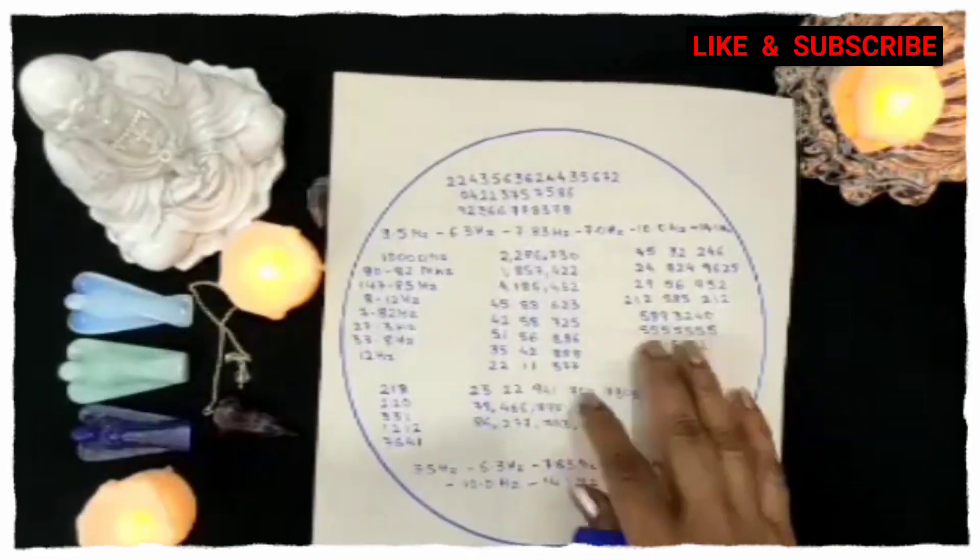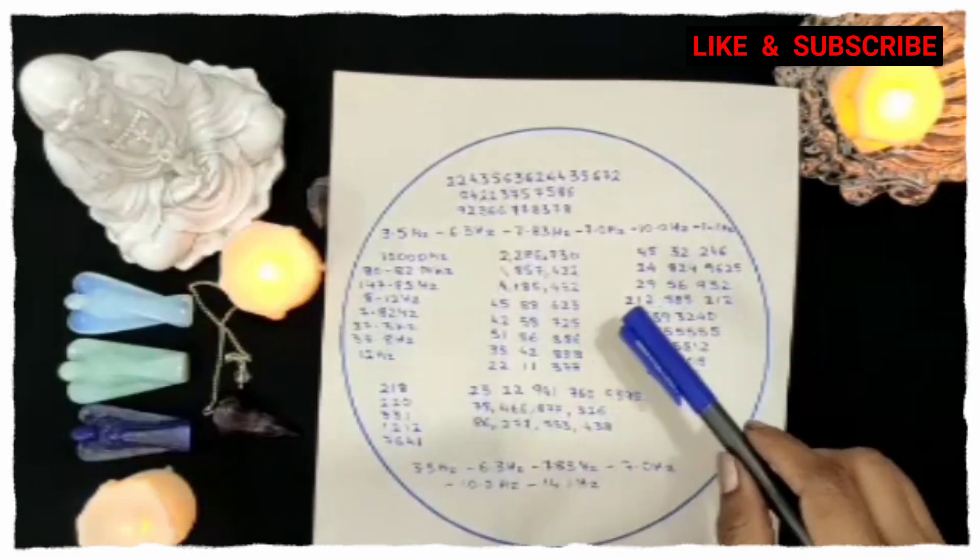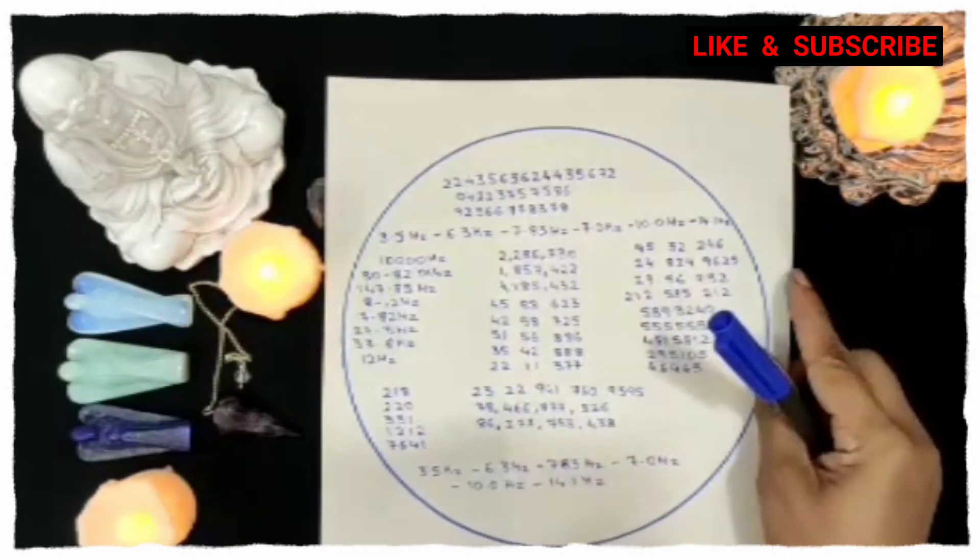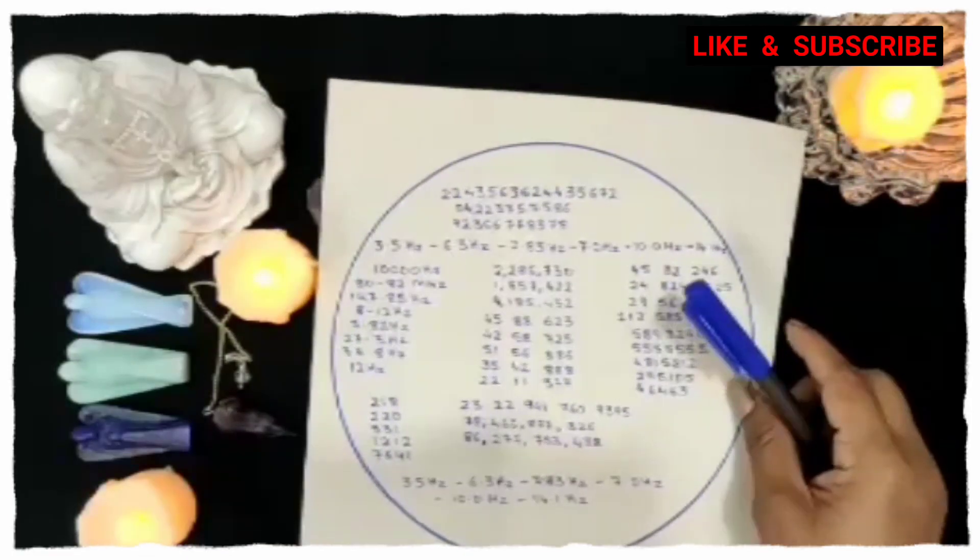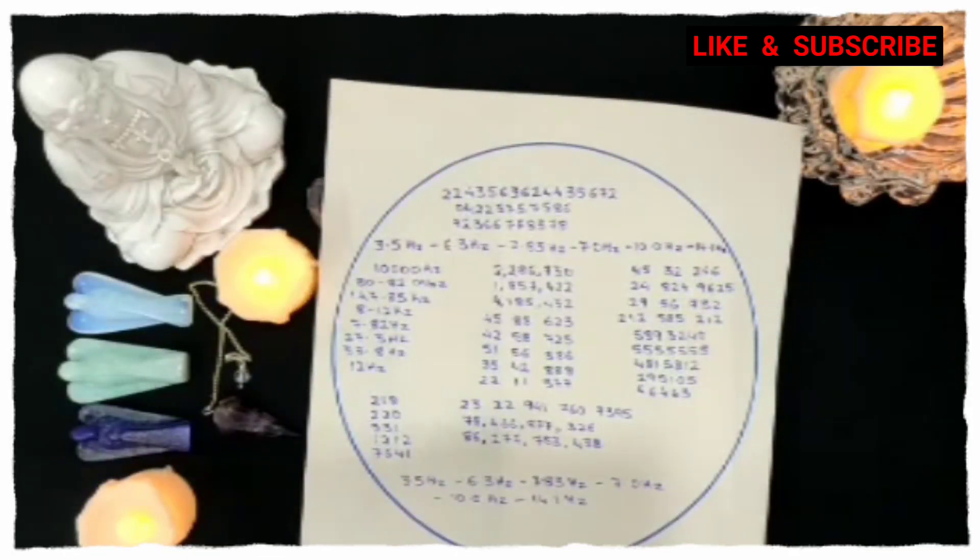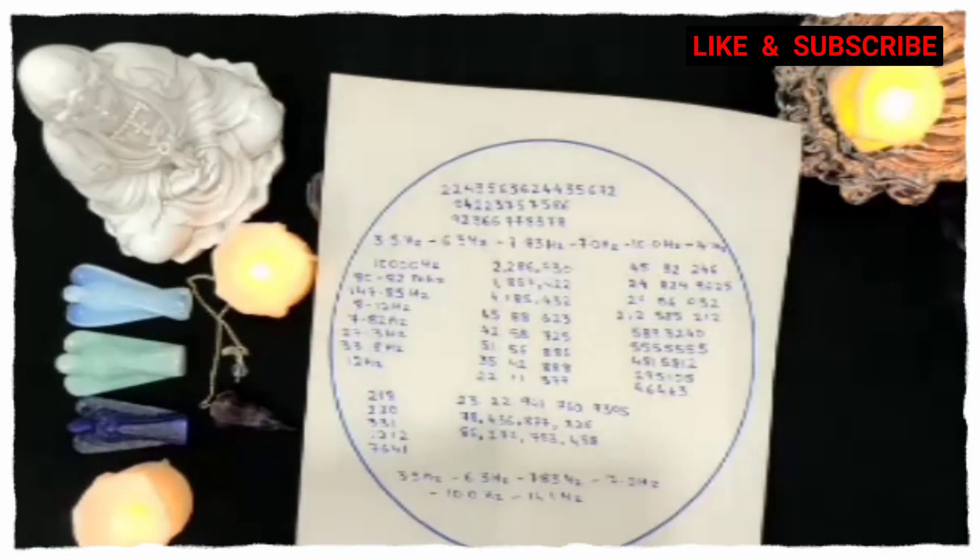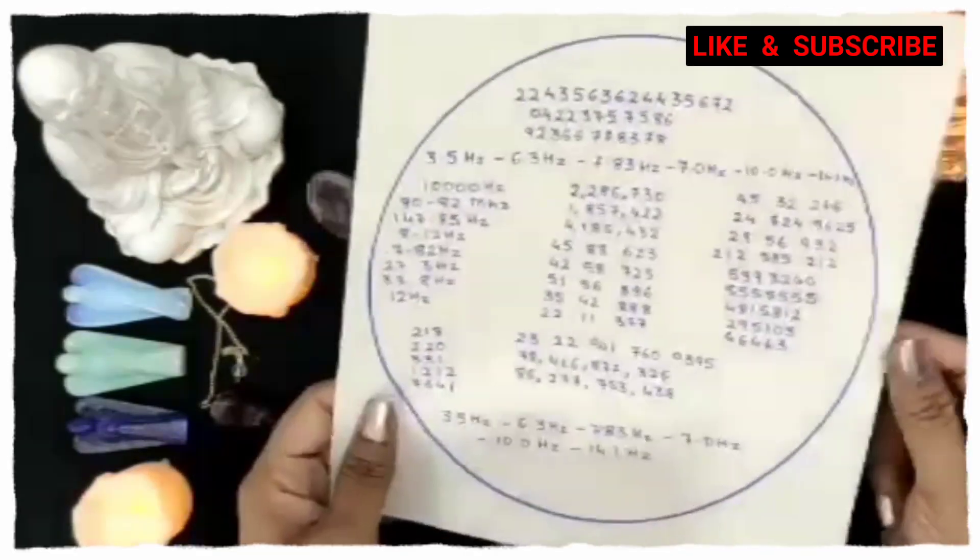You can stick this on a wall or near your study table. You can make an energy circle like this and keep it under your bed or pillow so that while you're sleeping, these codes continue to work.